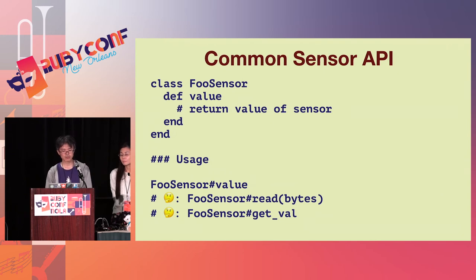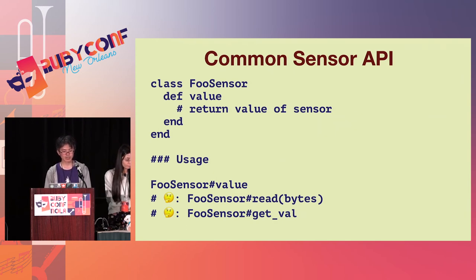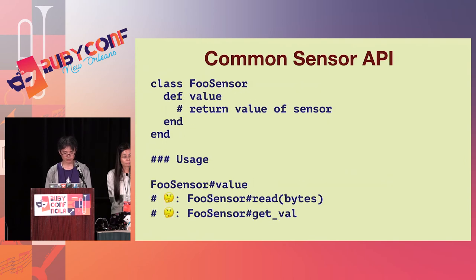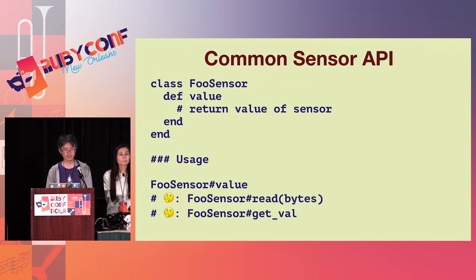This is a proposal to unify the method names of sensor acquisition methods. It is important to use abstract names rather than concrete names for methods. For example, the method that gets the value of a sensor should simply be called value. This name tends to be named after the C API function being called, but MRuby users do not need to know what C method is called internally.